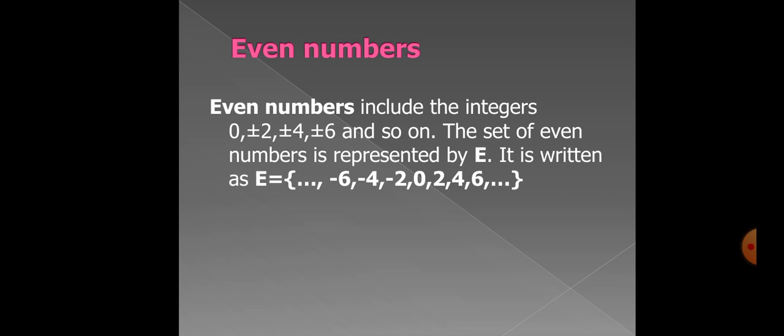So next, we have the definition of even numbers. Even numbers include the integers 0, plus minus 2, plus minus 4, plus minus 6 and so on. The set of even numbers is represented by E. It is written as E equal to calibrator start 0 in the middle of the numbers. Right side 2, 4 and 6 and left side minus 2, minus 4 and minus 6 and so on. Even numbers are the numbers that are divided by 2.